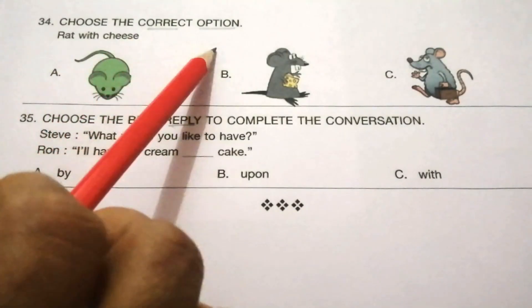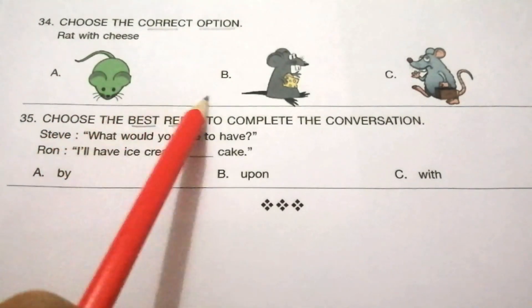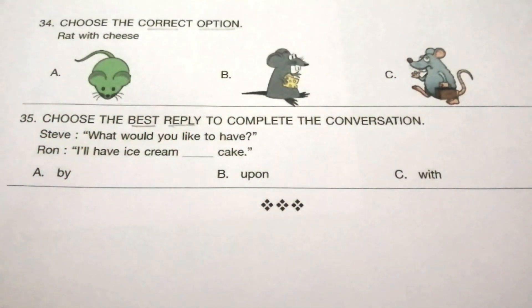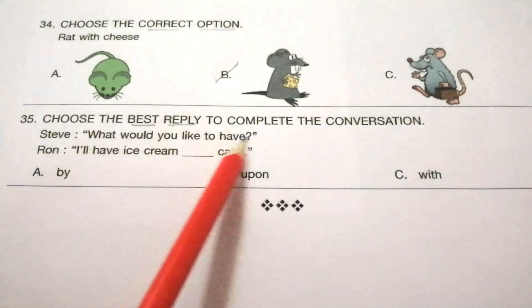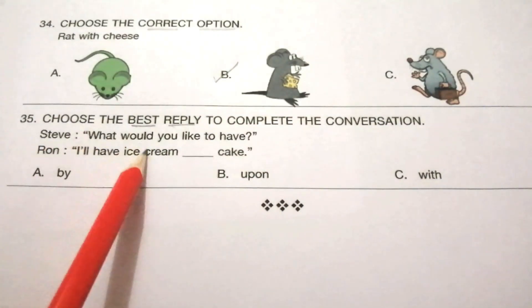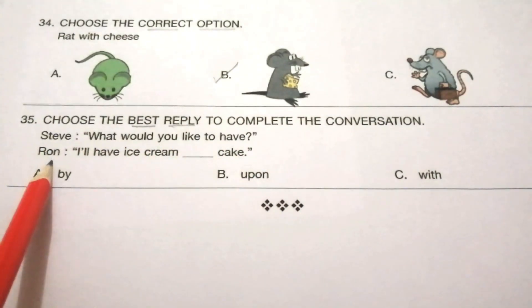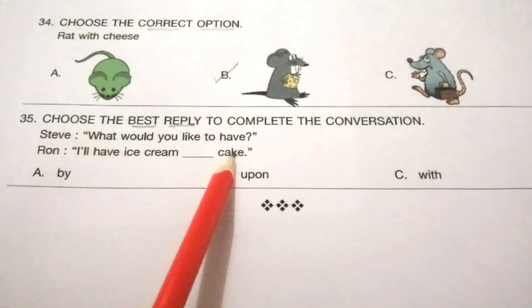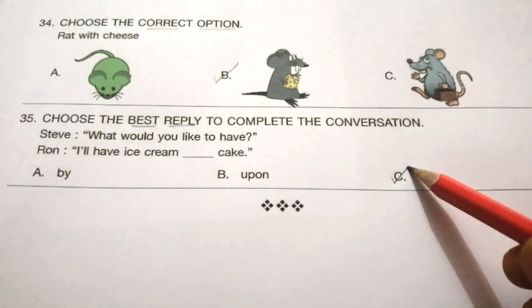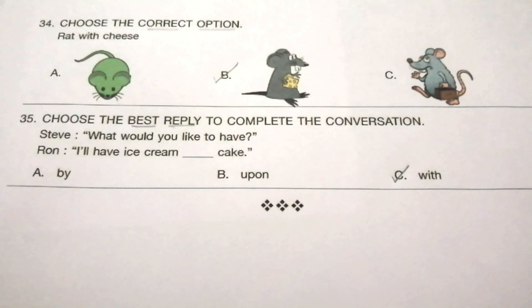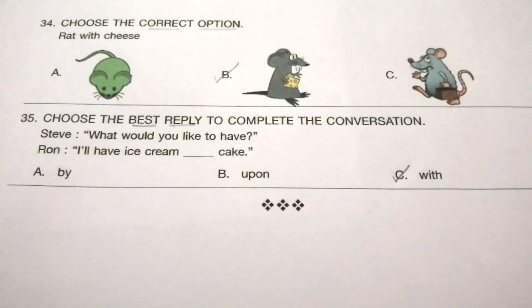Question 34: choose the correct option — rat with cheese. Look at the options carefully. The answer is B. Question 35: choose the best reply to complete the conversation. Steve: what would you like to have, Ron? Ron: I will have ice cream with cake. Options: by, upon, with. The answer is C — with. So, dear students, today we have completed the 2015 IEO question paper for Class 2 students. If you like this video, please like, share, comment, and don't forget to subscribe the channel. Thank you.